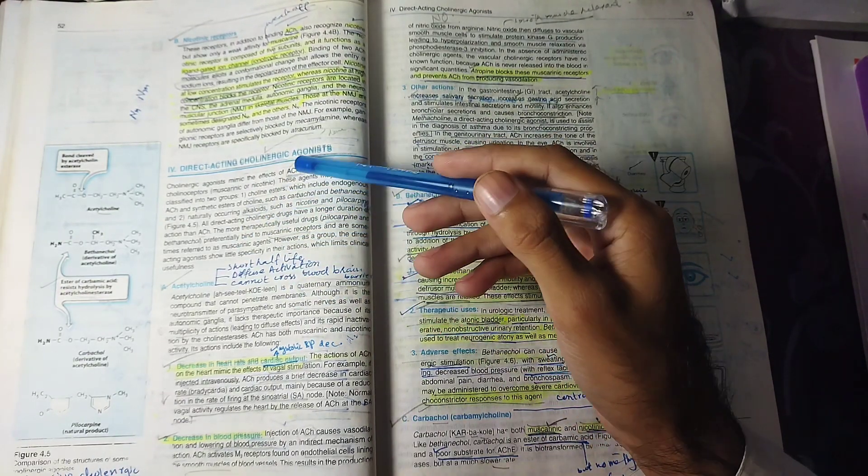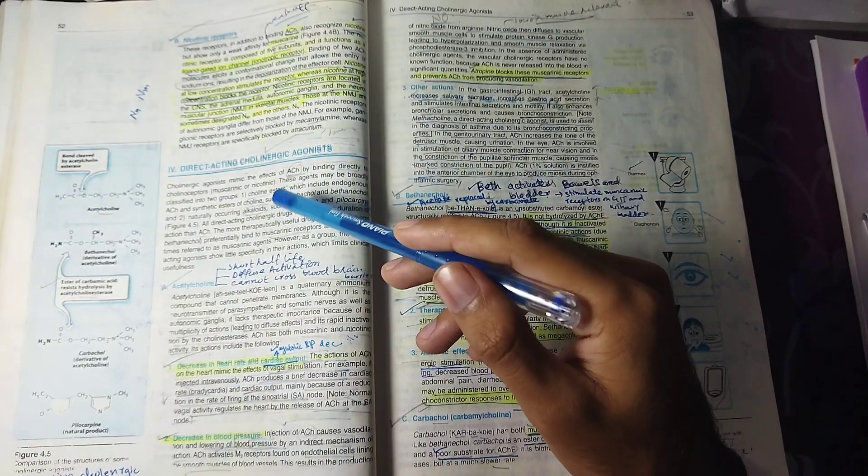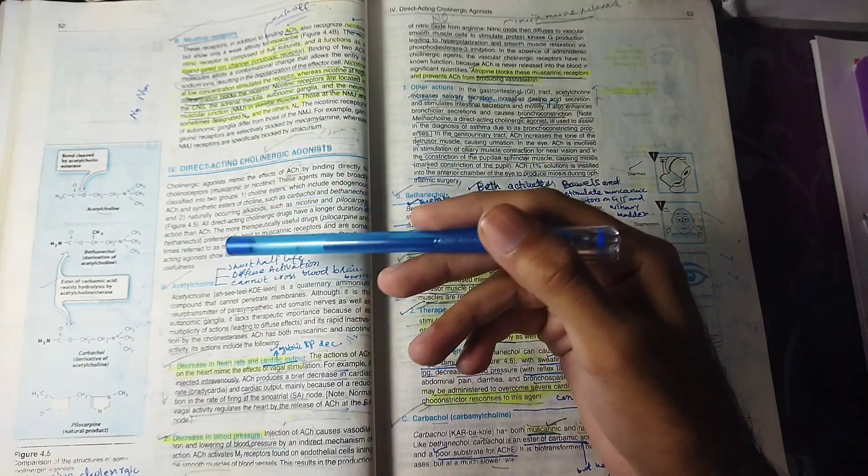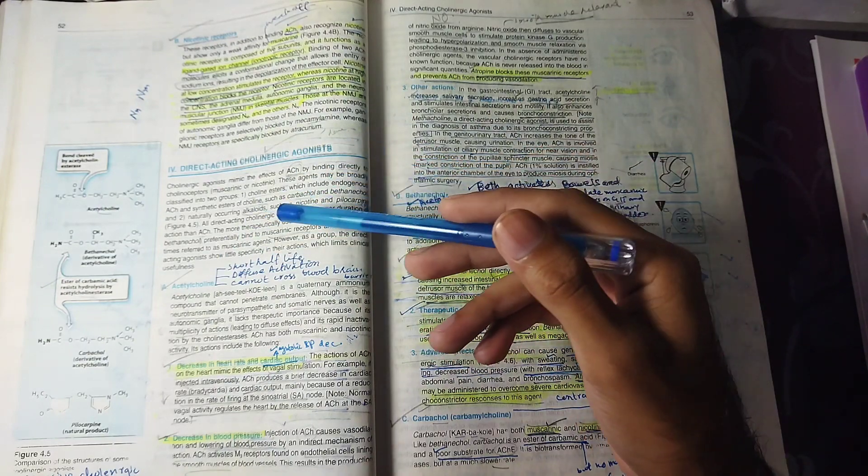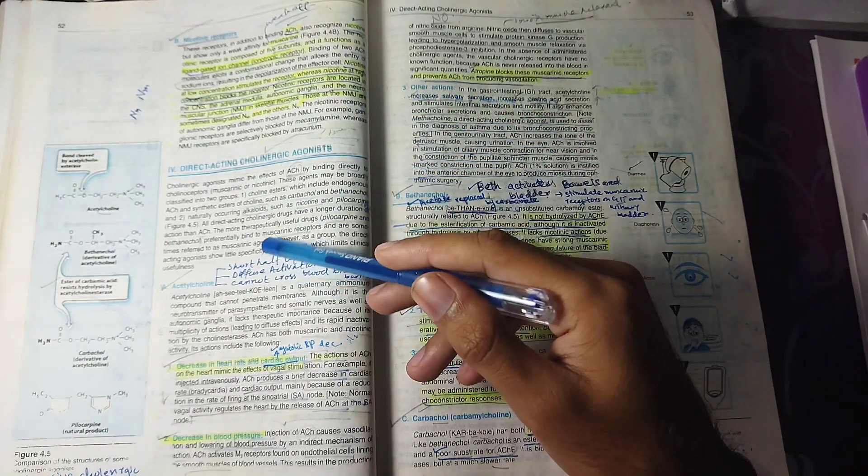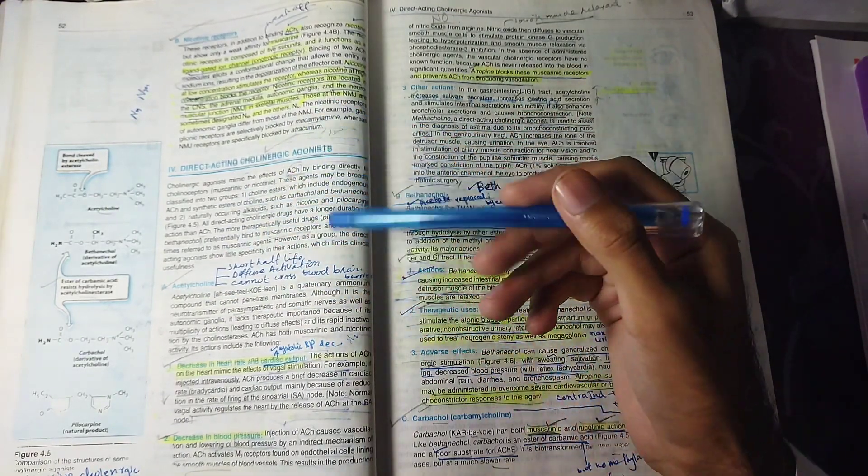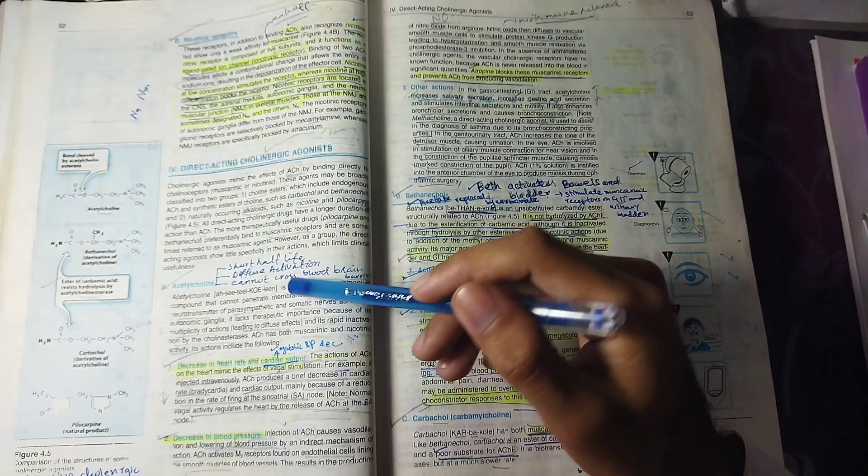But because this whole group is called cholinergics, they don't bind only with muscarinic receptors. They have a little affinity for nicotinic receptors, so they are not fully specific. That's why we call them cholinergics.